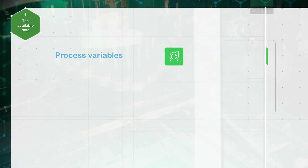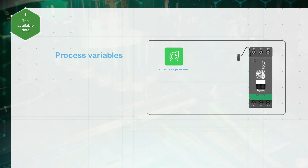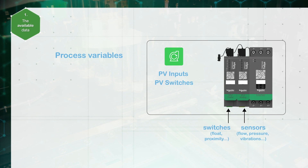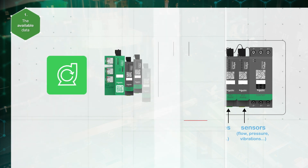To define process variables, let's consider the pump avatar. Process variable inputs receive analog values from sensors such as pressure, flow, or vibration meters — they connect to analog I/O modules included as part of the avatar. Process variable switches receive signals from switches such as float or proximity switches, and they connect to digital I/O modules included as part of the avatar.